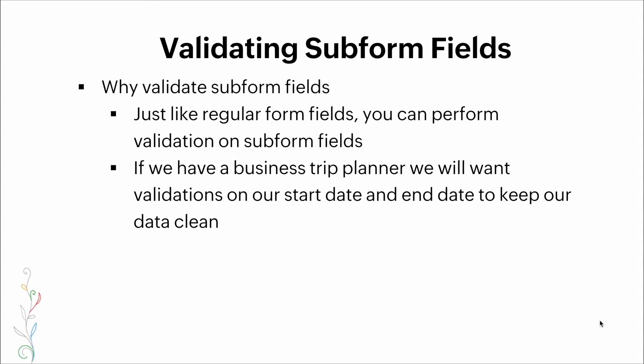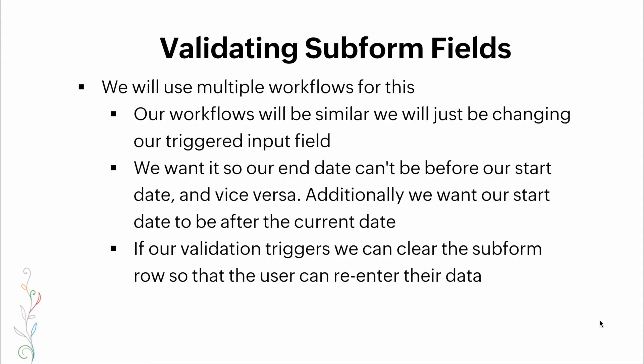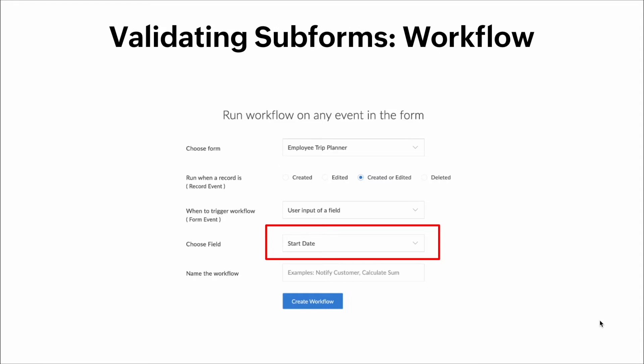Now, validating subform fields. Just like regular form fields, you can perform validation on subform fields. If we have a business trip planner, we want validation on our start date and end date to keep our data clean. Here's a visual: a subform with start date and end date fields. For this example we will use multiple workflows with similar setups, just changing the trigger input field. We want the end date not to be before the start date, the start date to be after the current date, and if validation triggers we can clear the subform row so the user can re-enter the data.